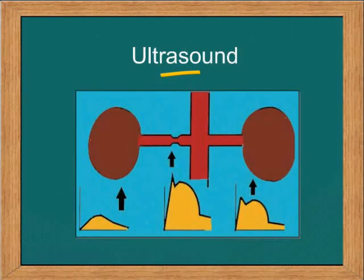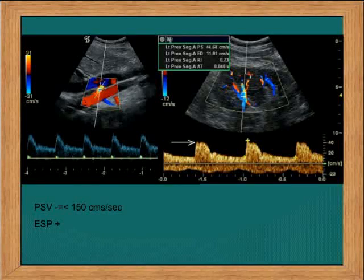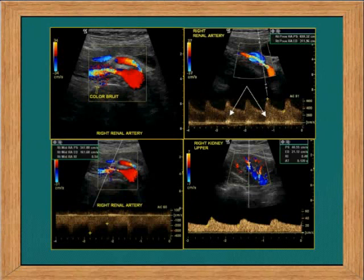This diagram shows the normal Doppler pattern on the left side and the raised peak systolic velocity on the right side. The pattern seen beyond the stenosis is also demonstrated — one would see a very slow rise in peak systolic velocity and turbulence beyond it. This is what a normal renal artery Doppler looks like versus what is expected in renal artery stenosis: prolonged acceleration time, broadening of the spectrum, and decreased systolic velocity.